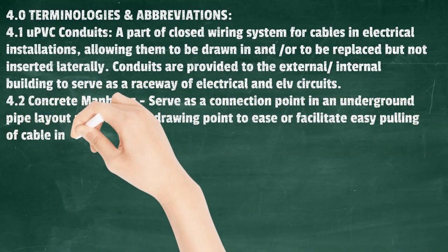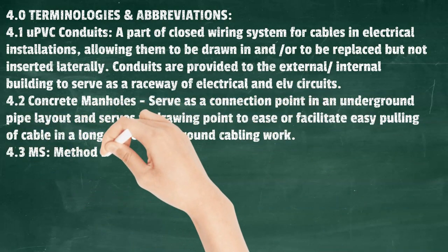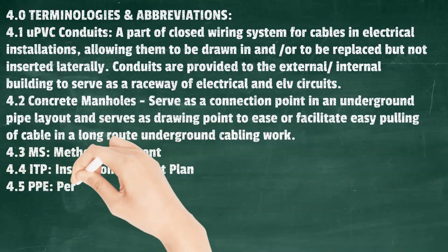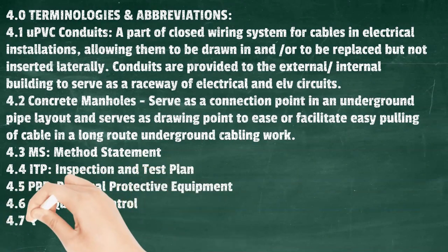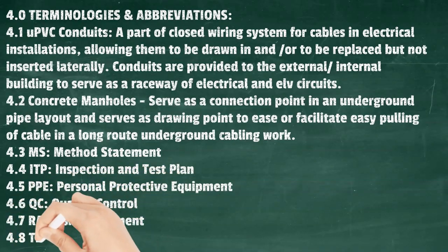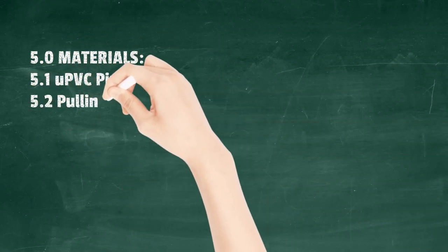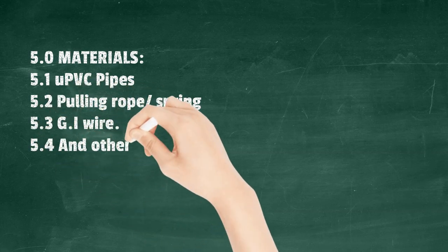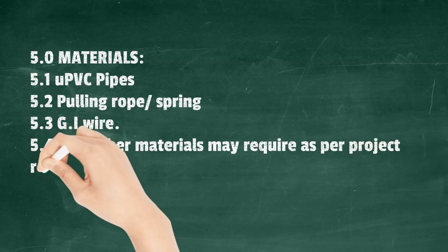Abbreviations: M.S. - Method Statement; I.T.P. - Inspection and Test Plan; P.P.E. - Personal Protective Equipment; Q.C. - Quality Control; R.A. - Risk Assessment; T.B.T. - Toolbox Talk.